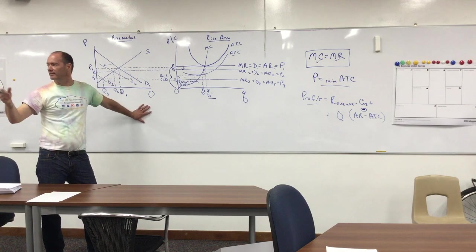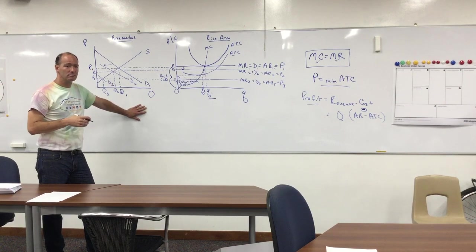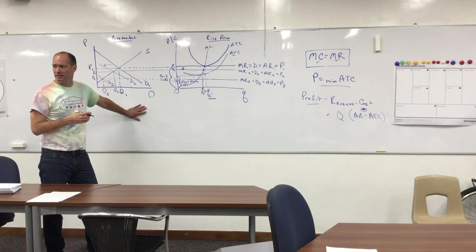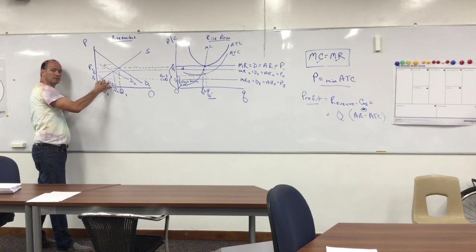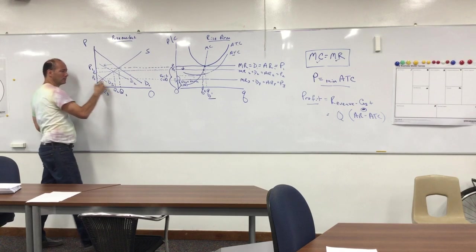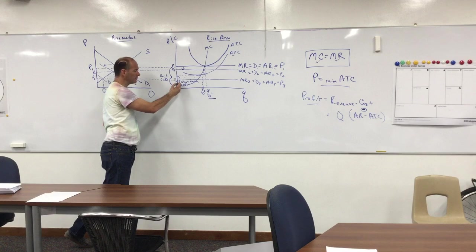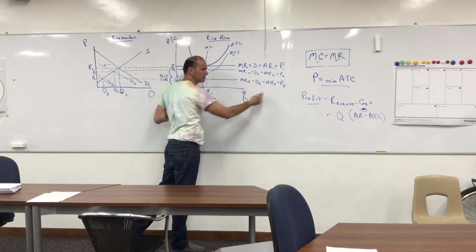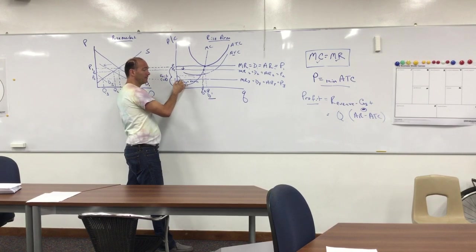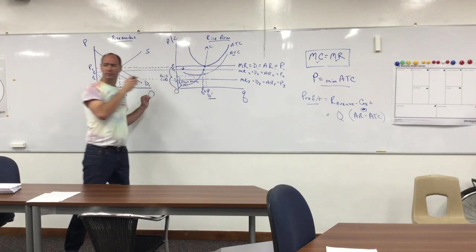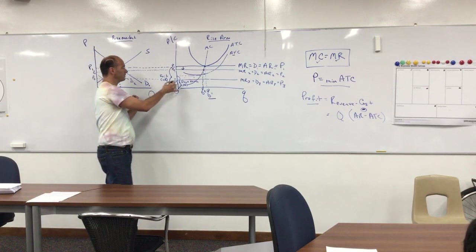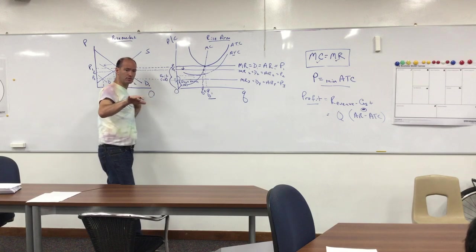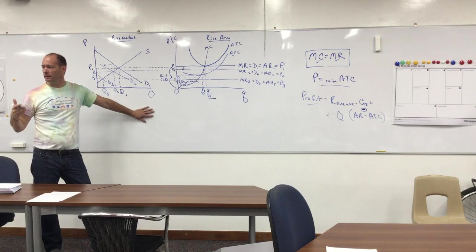Now let's assume a new event: not only does rice cause cancer, but national income also falls, so consumers have less income. Demand decreases even more to D3, and the price falls to P3. At P3, every unit the firm produces costs more to pay its workers than it receives in revenue, so it doesn't make sense for this firm to produce anything in the short run — it should shut down.